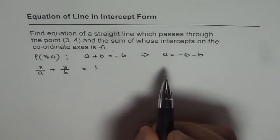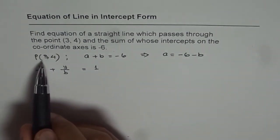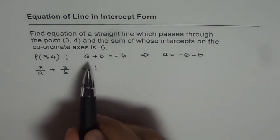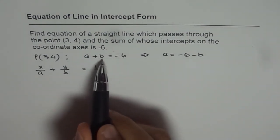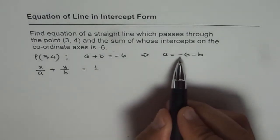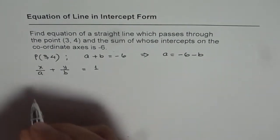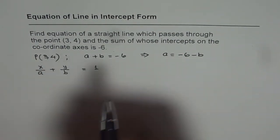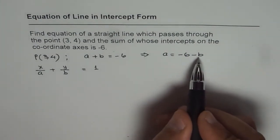We can use the point which is (3,4). 3 is the x value, 4 is the y value. a and b are x and y intercepts and we know a in terms of b. Instead of a, we can write -6 - b. We get our equation now as substituting the point and the value of a in terms of b.